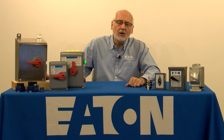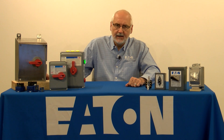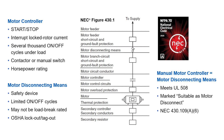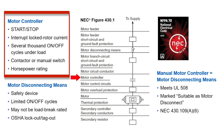So how do we control all that horsepower? Let's take a quick look at the code requirements for motor controllers and disconnects. A motor circuit has many parts — here's a diagram showing each one in its relative location. A motor controller is any switch or device used to start and stop a motor by making and breaking the motor circuit current, and it must be capable of interrupting the locked rotor current of the motor. It's designed for several thousand on and off cycles under load and will generally be either a contactor or a manual switch.